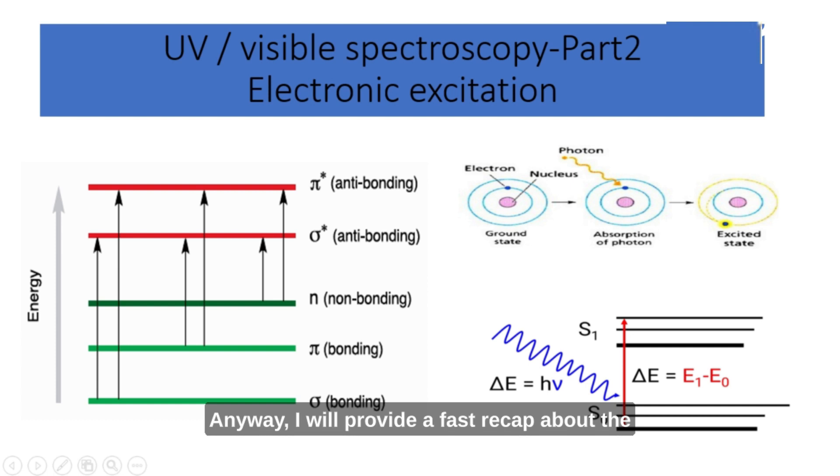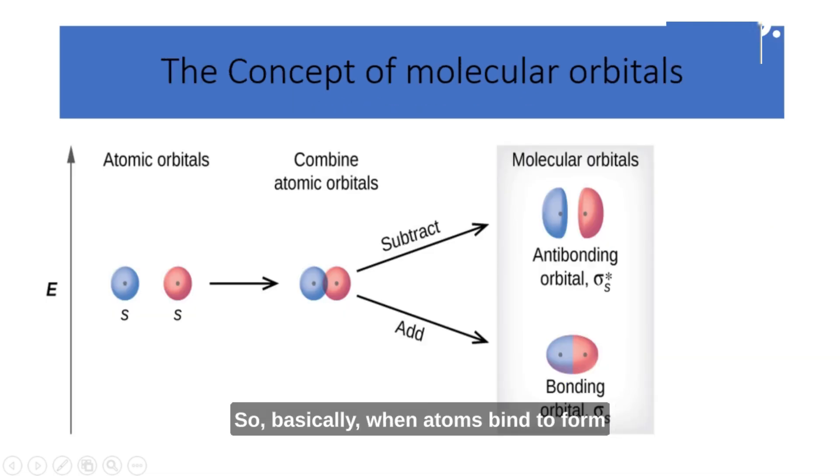Anyway, I will provide a fast recap about the concepts discussed earlier and needed to build up the idea of electronic excitation induced by UV Visible Spectroscopy. So basically, when atoms bind to form molecules, their atomic orbitals overlap to form what is known as molecular orbitals.